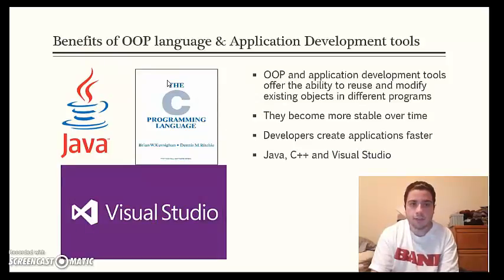Now we're going to get to some of the benefits of OOP language and application development tools. Both offer the ability to reuse and modify existing objects in different programs. They become more stable over time. So the more you use it, the better and more stable it's going to be. Developers can create applications faster because they don't have to keep rebuilding the same objects. They can just use them over and over again. Some examples of object-oriented programming in application development tools. Java is a big one that's going on right now. C++ or anything in the C programming language realm. And also Microsoft's Visual Studio, which is actually a suite.